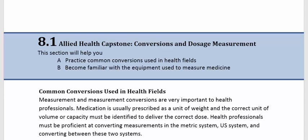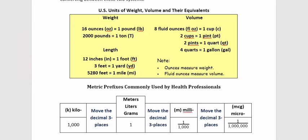Section 8.1: Allied Health Capstone - Conversions and Dosage Measurement. This section will help you practice common conversions used in health fields and become familiar with the equipment used to measure medicine. Measurement and measurement conversions are very important to health professionals. Medication is usually prescribed as a unit of weight, and the correct unit of volume or capacity must be identified to deliver the correct dose. Health professionals must be proficient at converting measurements in the metric system, US system, and converting between these two systems.